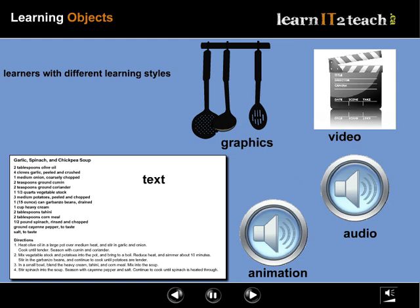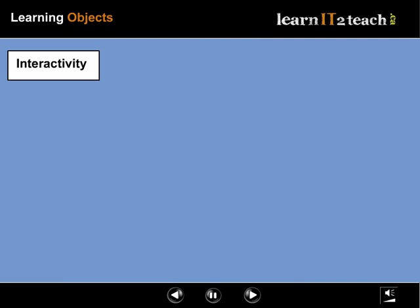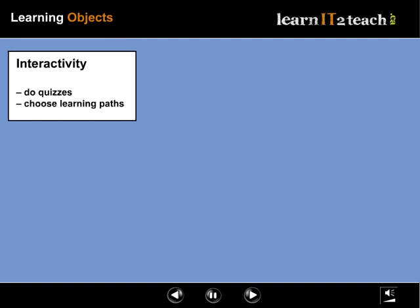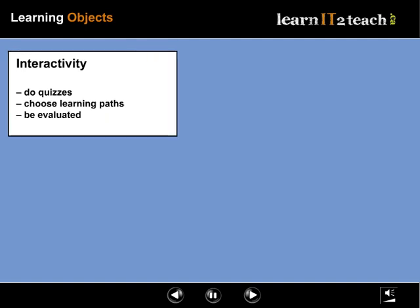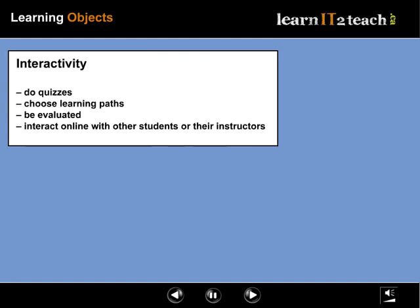Learners can not only read but also observe and listen. The final ingredient, interactivity, is very powerful because it allows learners to do quizzes, choose learning paths, be evaluated, or even interact online with other students or their instructors.